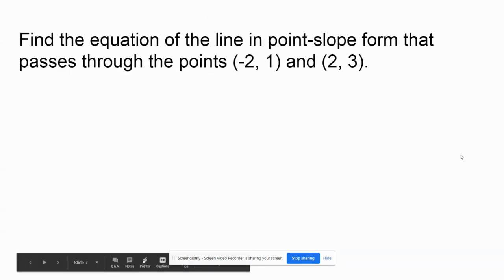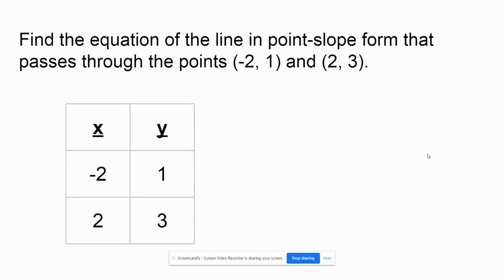Last but not least, we're going to look at this problem. Find the equation of the line in point-slope form that passes through the points negative 2, 1, and 2, 3. I think it's most helpful when you're given a problem like this with 2 points to put your information in a table. Once I do that,